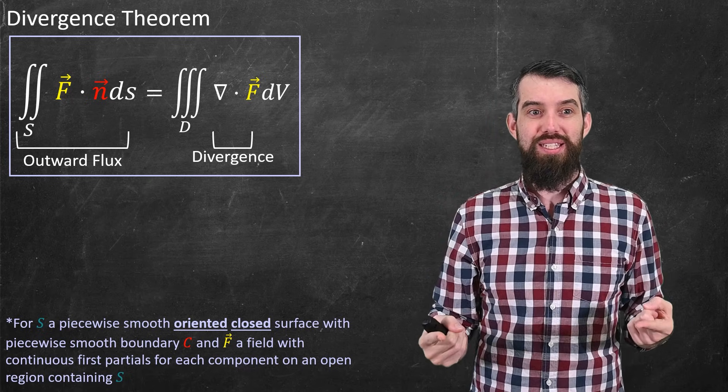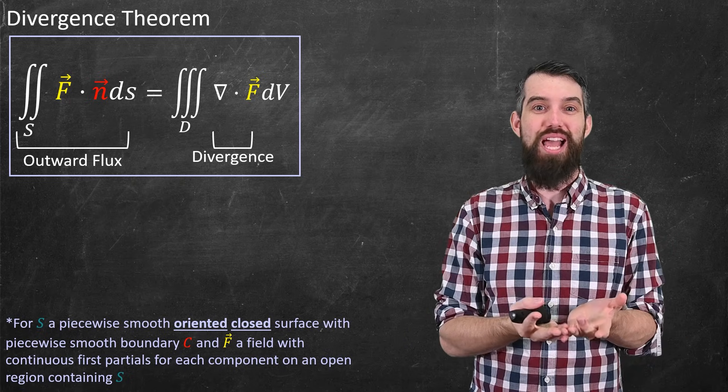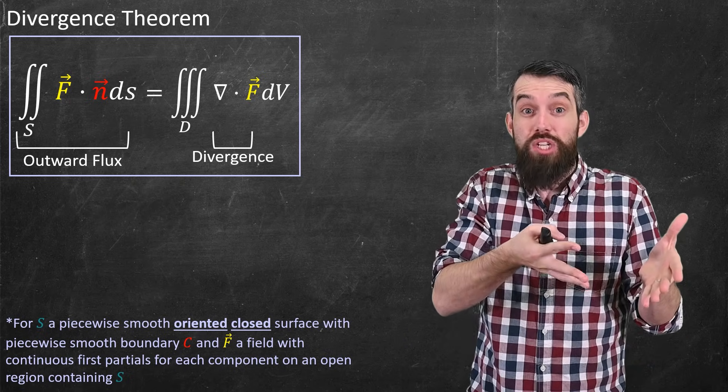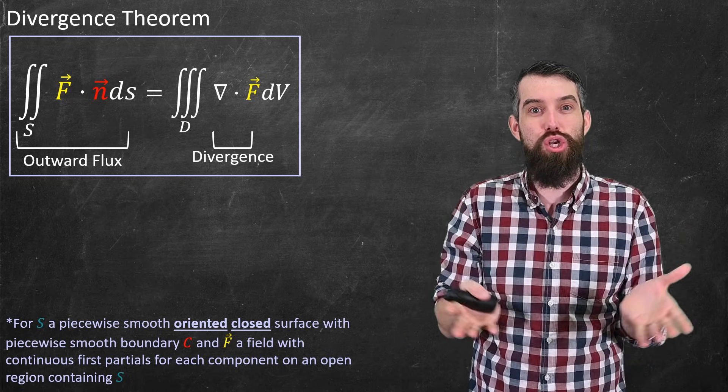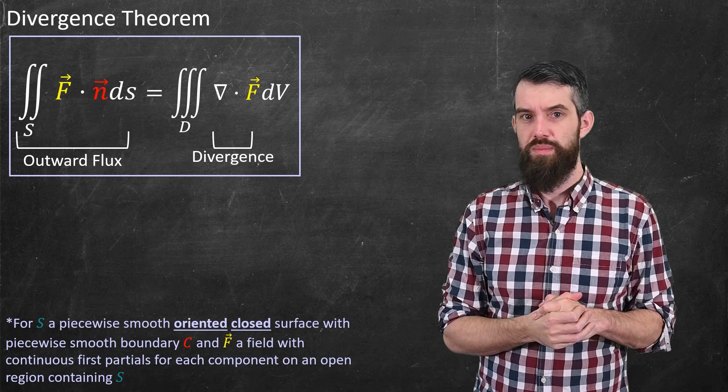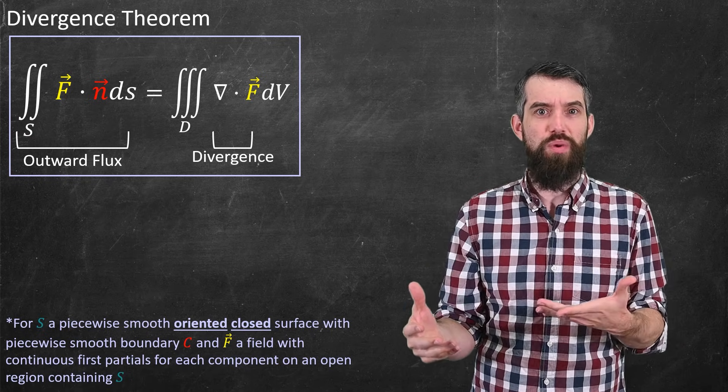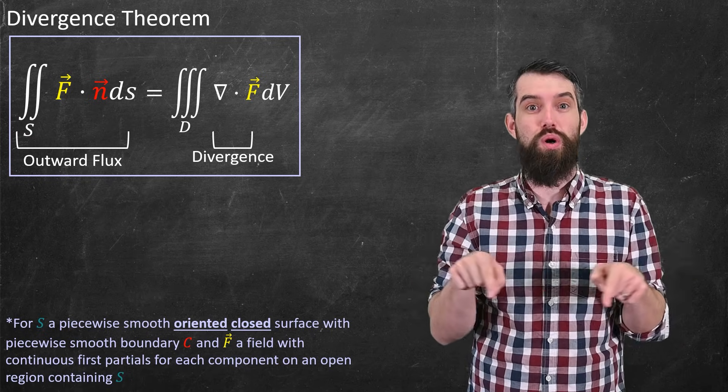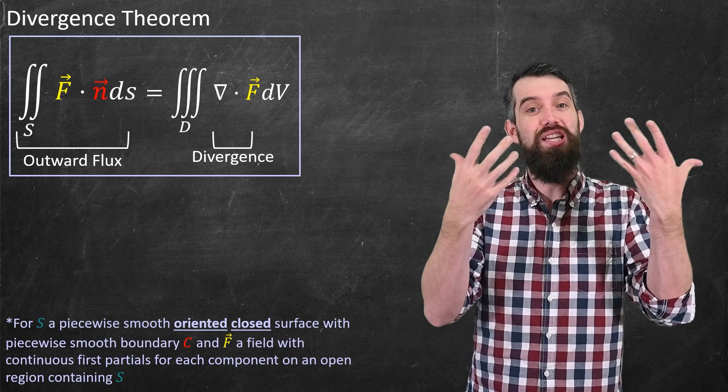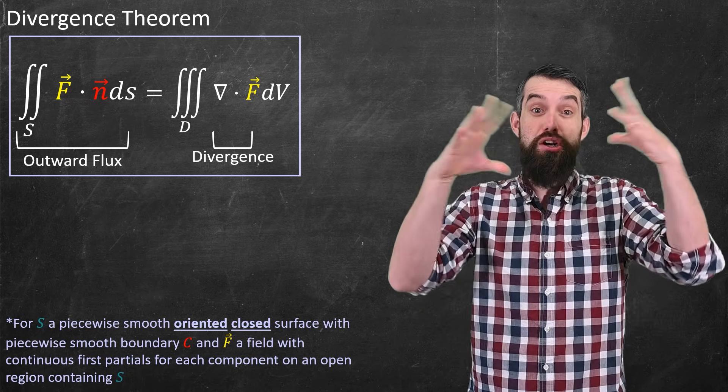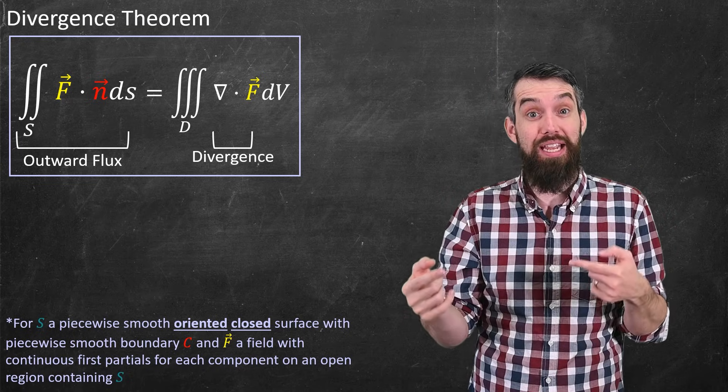That is, the divergence theorem doesn't make sense for, for example, a bowl with an open top. It has to be something that completely closes a region. This is somewhat analogous to in Green's theorem. We also demanded that our curves were closed here, and thus contained an area. Now we're imagining our surface is closed, and thus containing a volume.